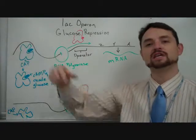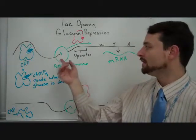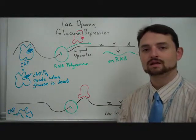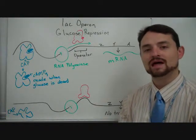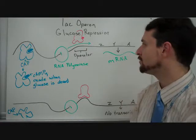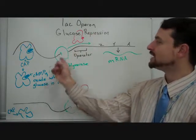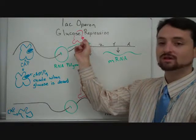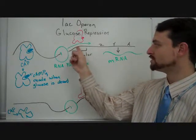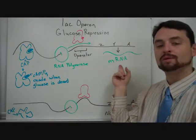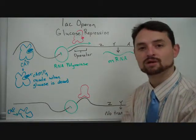This will actually encourage RNA polymerase to make or transcribe the lac genes, the lac operon genes. When glucose is absent, and lactose is present, you've got allolactose here, so the operator is open, RNA polymerase will proceed, mRNA will be made, and lactose will be broken down for energy.